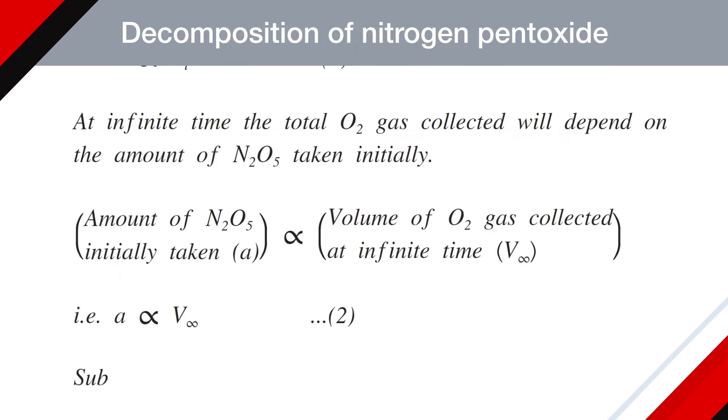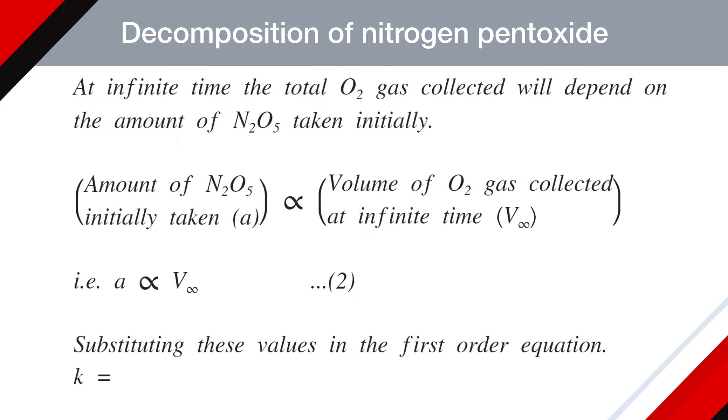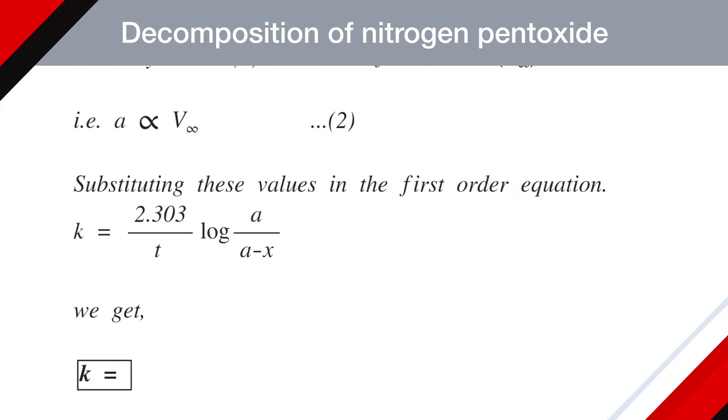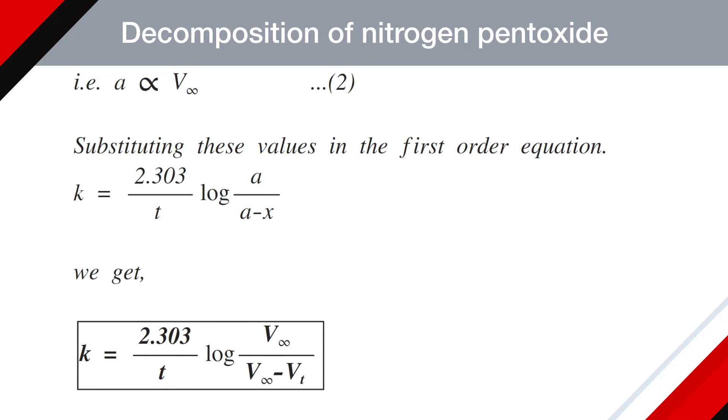This is equation number 2. Substituting these values in first order equation, which is K equals 2.303 divided by T log of V infinite divided by V infinite minus Vt. This is the equation which governs the decomposition of nitrogen pentoxide.